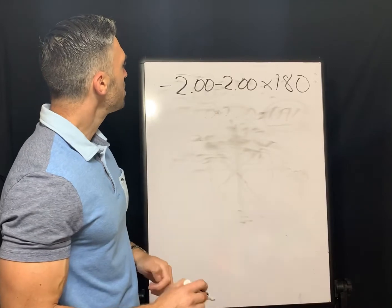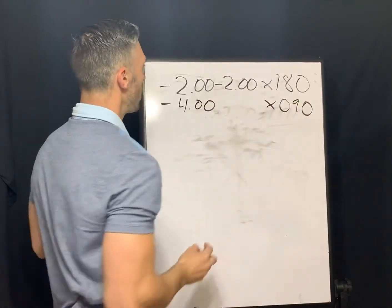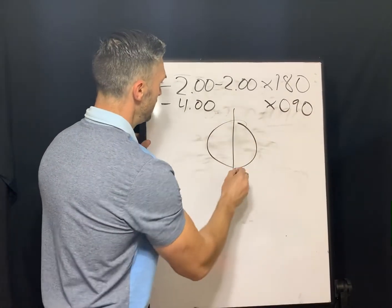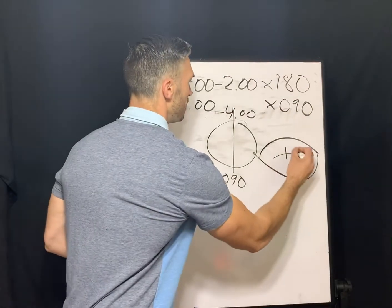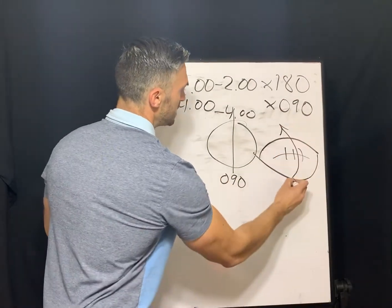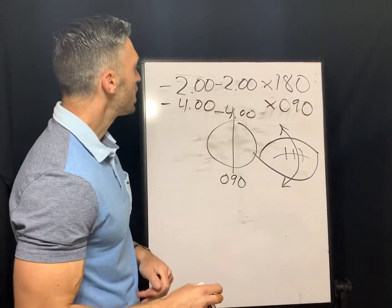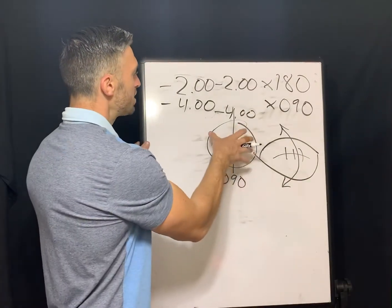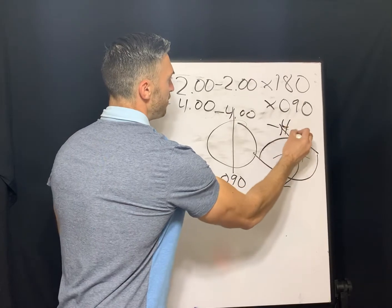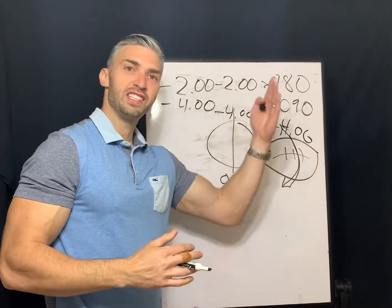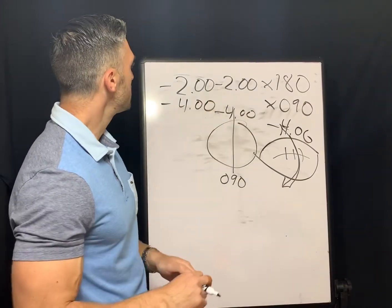We know it's sphero-cylindrical, and the two major meridians are 180 at negative 2 and axis 90 at negative 4. So the greatest power is along the 90 degree axis. I use the illustration of a football laying on the ground — the cornea is steepest in the vertical meridian. So we know this is a with-the-rule astigmatism example. We're putting a minus-powered lens in front of your football-shaped eye, and you want the most minus power — this negative 4 — along the vertical because the cornea is steepest there, neutralizing the most plus power.